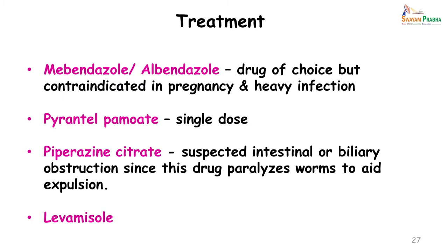Treatment of ascariasis is done with mebendazole or albendazole. These are the drugs of choice and are usually given in a single dose. However, they are contraindicated in pregnancy and in heavy infections because in heavy infestation they can lead to intestinal obstruction. Pyrantel pamoate or piperazine citrate can also be given. Piperazine citrate has the advantage that the drug paralyzes the worm and aids in its expulsion. The newer drug levamisole can also be given, but mebendazole and albendazole are generally sufficient.